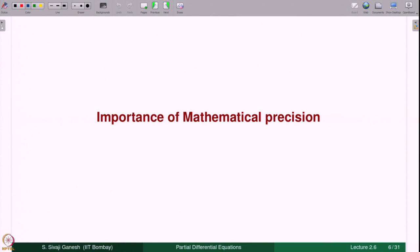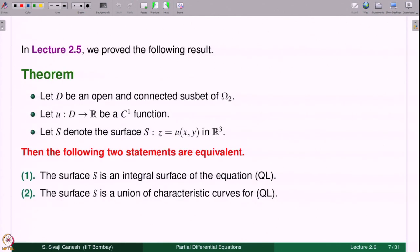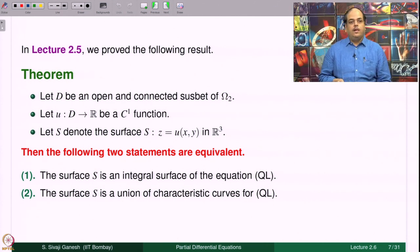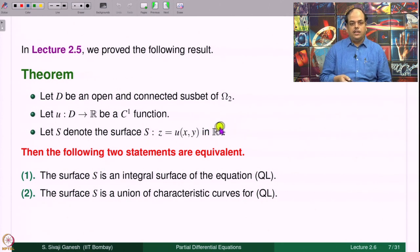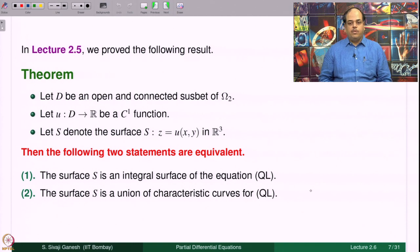Let us state the theorem proved in lecture 2.5. Given a C¹ function u defined on a domain D in omega_2, and S denoting the surface z = u(x,y) — the graph of u in R³ — then S is an integral surface if and only if S is a union of characteristic curves for the quasilinear equation. This is what we discussed and proved in lecture 2.5.